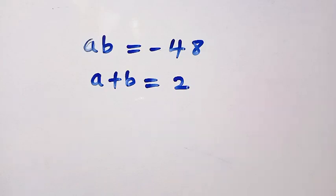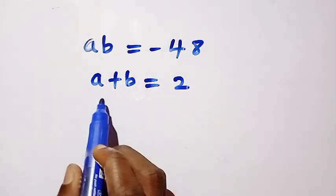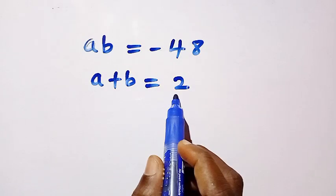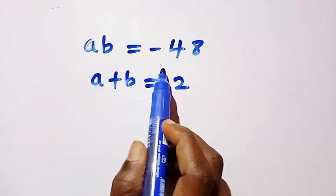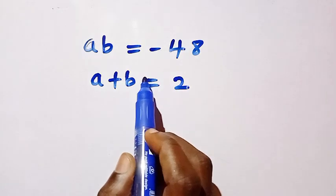Good day viewers, you are welcome. How to solve this nice system of equations: we have ab equals minus 48 and we have a plus b equals 2. So in the first equation here we're having negative, and this equation seems like two things - are we getting complex numbers or real numbers?